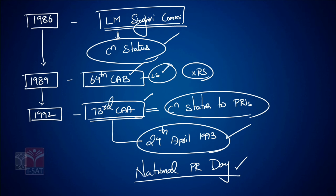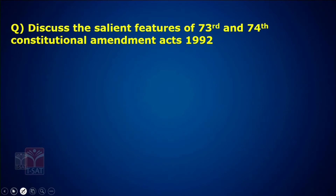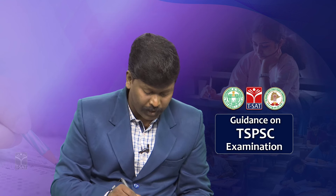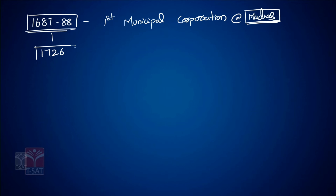This is the evolution of Panchayati Raj in India. Local self-governance also includes both rural and urban. Let us see how the urban local self-governance evolved in India. In 1687-88, the first municipal corporation was formed at Madras by the British. Then in 1726, municipal corporations were formed at Bombay and Kolkata.